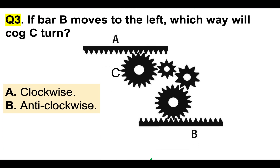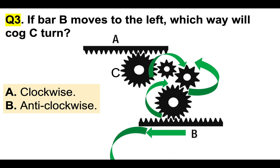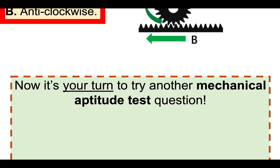If bar B moves to the left, which way will COG C turn? You have to go through each COG that is linked to bar B in your mind. If B goes to the left, that COG will turn clockwise; the one above it will go anticlockwise; the next one clockwise; and COG C would go counterclockwise. So the correct answer is B — anticlockwise. You would work this out in your mind, and that's why you need to practice lots of them.